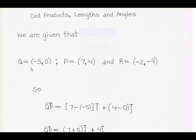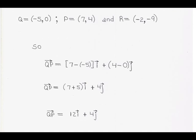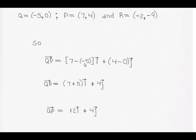We are given that Q is equal to (-5, 0), P equals (7, 4), and R equals (-2, -9). So vector QP is written as (7 minus negative 5) times the unit vector i, plus (4 minus 0) times the unit vector j. That gives us (7 + 5)i + 4j. Finally, vector QP is equal to 12i + 4j, where i represents the unit vector along the x-axis and j the unit vector along the y-axis.